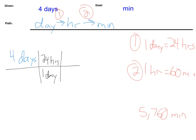Days on top are going to cancel out with days on bottom, and we need to continue on. Since I have hours on top here, I know that I need to put hours on bottom, and one hour was equal to 60 minutes. Hours on top cancel out hours on bottom. I wanted to get into units of minutes, and that's exactly what we did. So now all I'm going to do is take everything on top and multiply it, then divide by everything on bottom — which in this case is just one — so we're going to take four times 24 times 60.